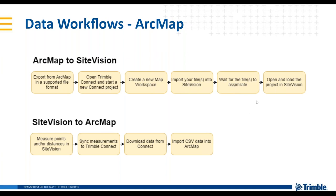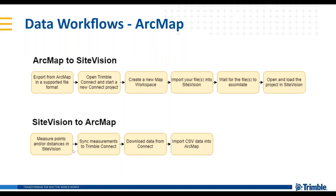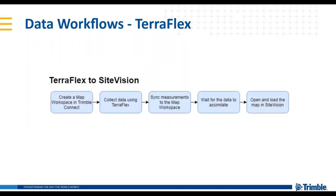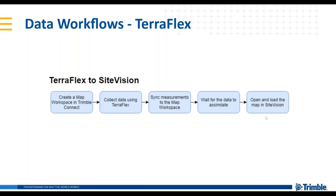Points measured with the EDM or AR Core — those are saved in the CSV file. You bring that CSV into ArcMap and turn those into points within your data set. TerraFlex is essentially the same workflow as ArcMap using shapefiles or geodatabases. You'd create a workspace in Trimble Connect, collect the data in TerraFlex, sync that data back to Connect and add it to your map workspace. In Connect, it will automatically assimilate and then that data is ready to open and visualize in Site Vision.